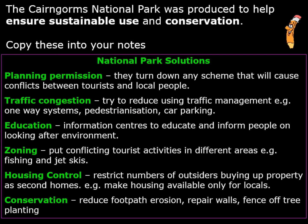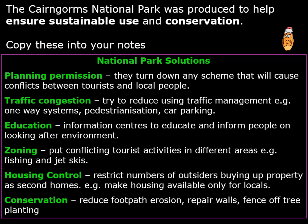Now let's have a look at some of the specific National Park solutions put in place for land use conflicts. The Cairngorms National Park was created to help ensure sustainable use and conservation. Copy in these notes about how they help reduce conflict. Planning permission: they turn down any scheme that will cause conflict between tourists and locals. They will not allow big industrial factories or retail units to be built there, and will only allow things that are in keeping with the natural environment — sometimes shielded behind trees or in forested areas.